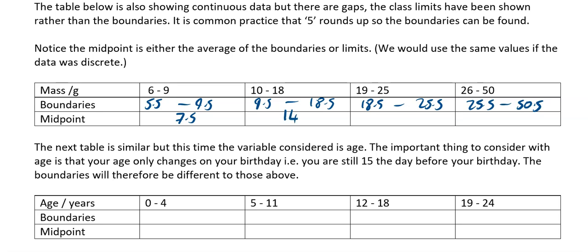The next midpoint is 14. Then 18.5 plus 25.5, divide by 2, is going to be 22. And 25.5 plus 50.5, divide by 2, is going to give you 38.